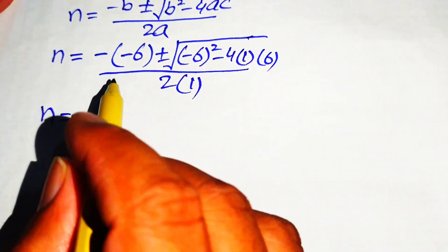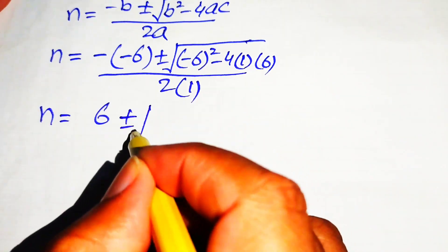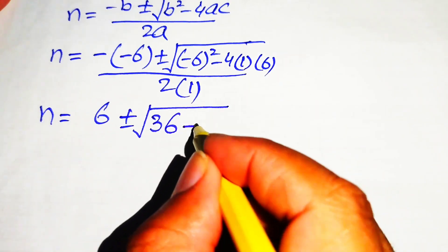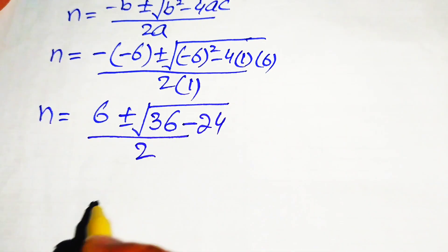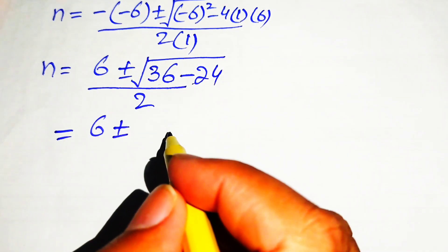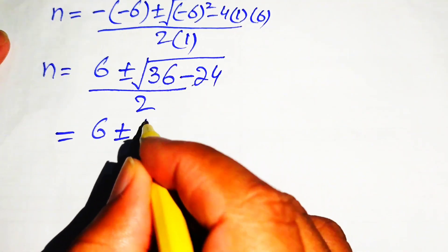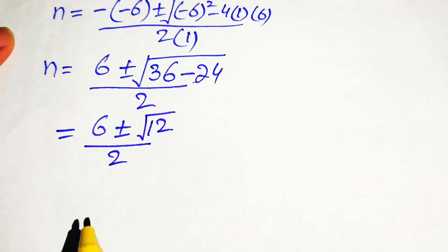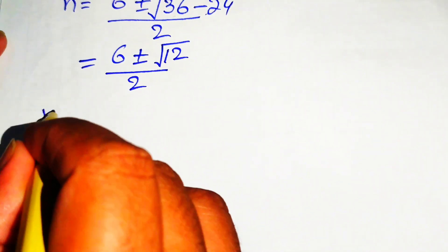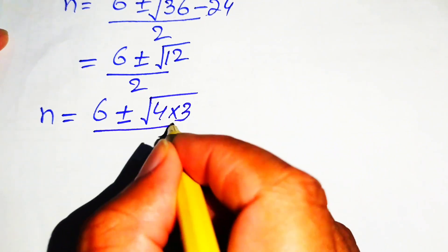Simplifying: minus times minus 6 gives plus 6. Under the square root, minus 6 squared equals 36, and 4 times 6 equals 24, so we have 36 minus 24 equals 12. The expression becomes 6 plus or minus the square root of 12, divided by 2. We write 12 as 4 times 3.